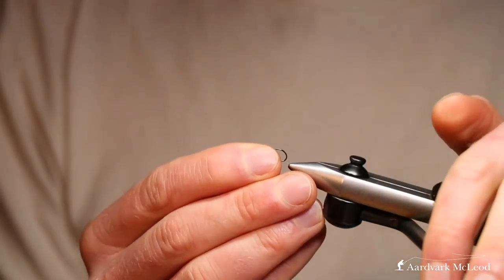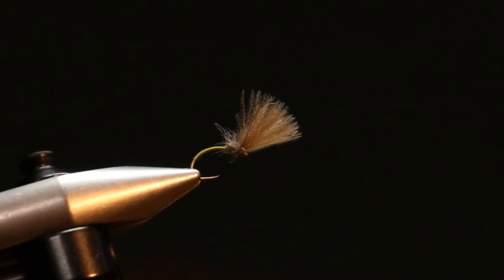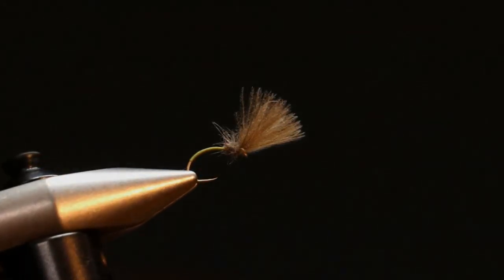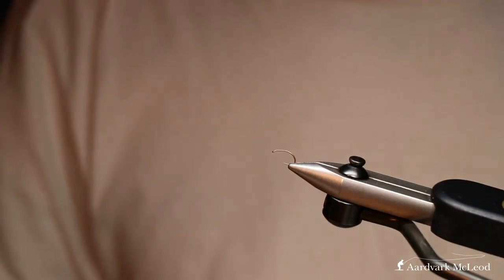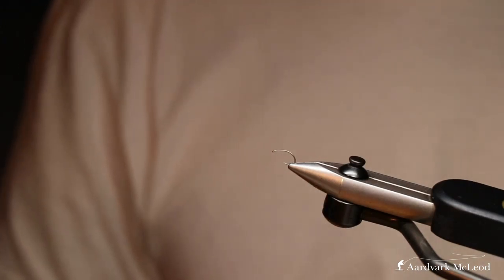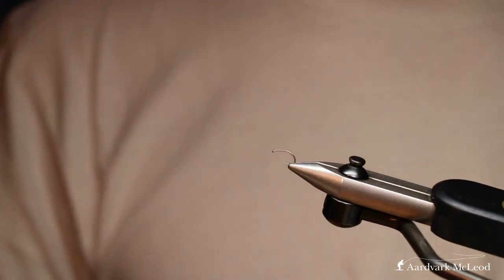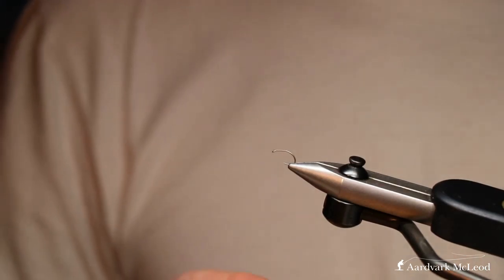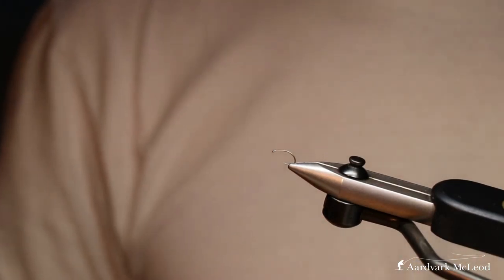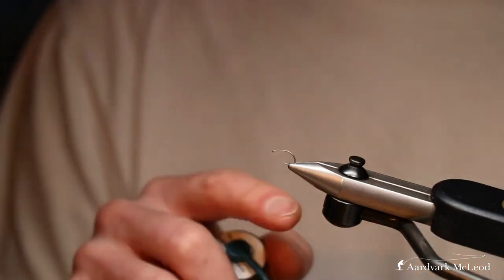Moving on to another fly now, the Stu's Olive. Slightly different shape of hook. This is an emerger now, so this is a bit more of an all-encompassing tri-fly. Either when you're not too sure what's emerging or you're not picking the fish up on things like the LDO and quill-bodied dun, you can go to a pattern like this. It might be that the fish are taking the emergers.